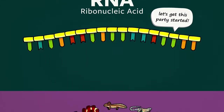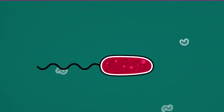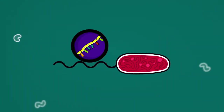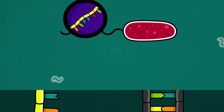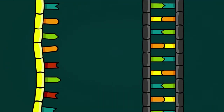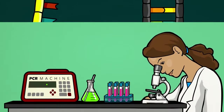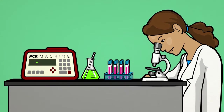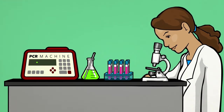RNA is thought to have given rise to life for several reasons. Chains of RNA are found abundantly in all living cells today. RNA is a close chemical cousin to DNA. And with very little help from researchers, RNA chains can replicate, evolve, and interact with their environments.